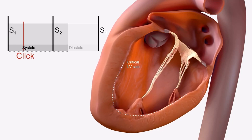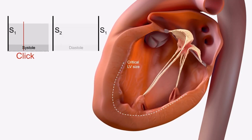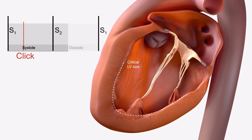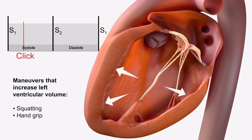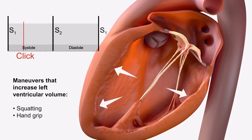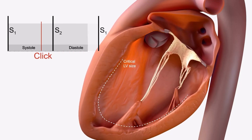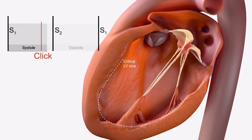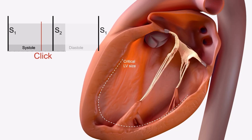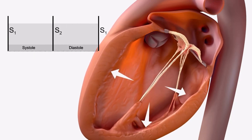Changes in left ventricular end-diastolic volume affect the timing of prolapse. Maneuvers that decrease left ventricular volume increase the available slack in the valve apparatus, causing prolapse to occur earlier in systole. Maneuvers that increase left ventricular volume decrease the available slack in the valve apparatus, causing prolapse to occur later in systole.